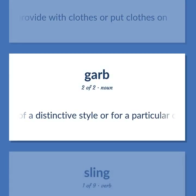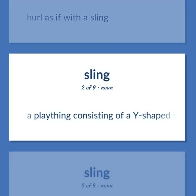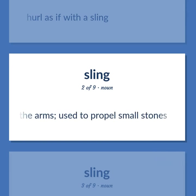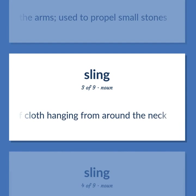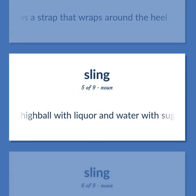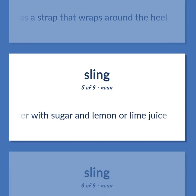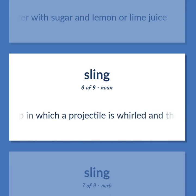Sling: Clothing of a distinctive style or for a particular occasion. Hurl as if with a sling. A plaything consisting of a Y-shaped stick with elastic between the arms, used to propel small stones. Bandage to support an injured forearm, consisting of a wide triangular piece of cloth hanging from around the neck. A shoe that has a strap that wraps around the heel. A highball with liquor and water with sugar and lemon or lime juice.